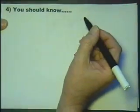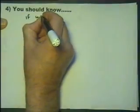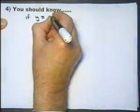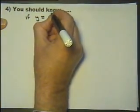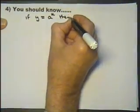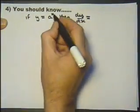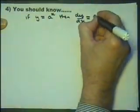For question number four, you should know that if you get y equals a constant, a number to the power of x, and you differentiate that, then dy/dx equals exactly that again